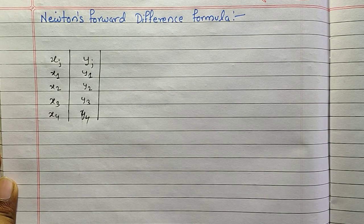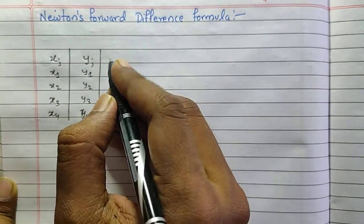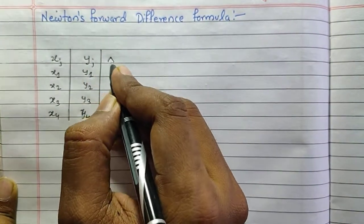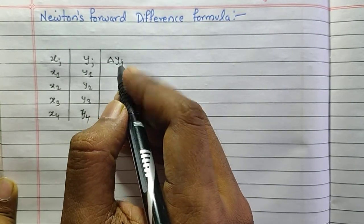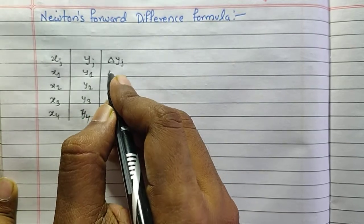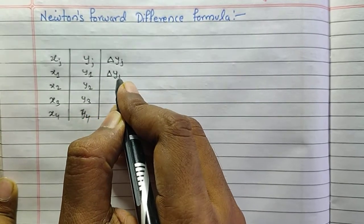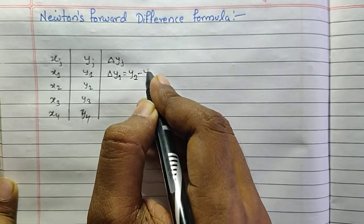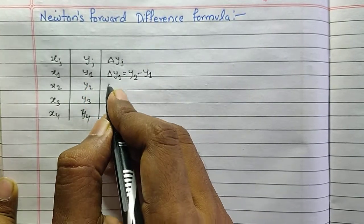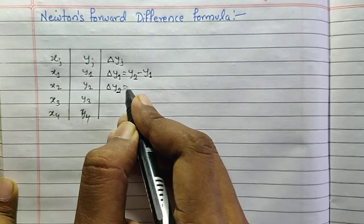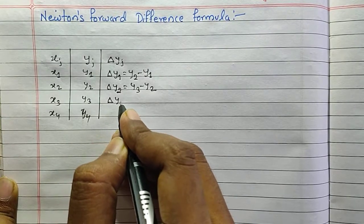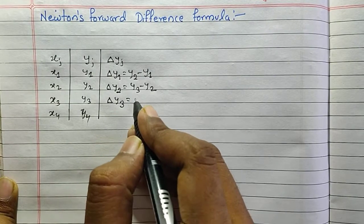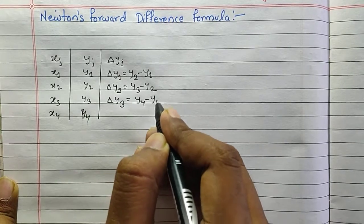Suppose we are given the range x and y as x1 y1, x2 y2, x3 y3, x4 y4. The forward difference is denoted by delta y_j, where j is the number of the term. So delta y1 equals y2 minus y1, delta y2 equals y3 minus y2, and delta y3 equals y4 minus y3.